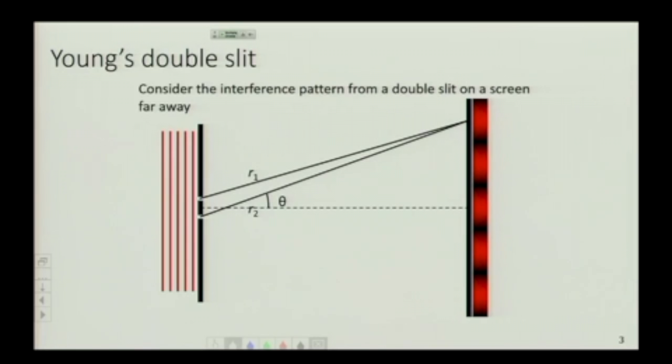So reviewing double slit interference. An interference phenomenon is a phenomenon related to the wave nature of light or to the wave nature of anything.